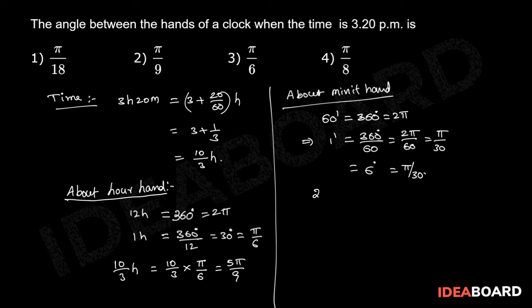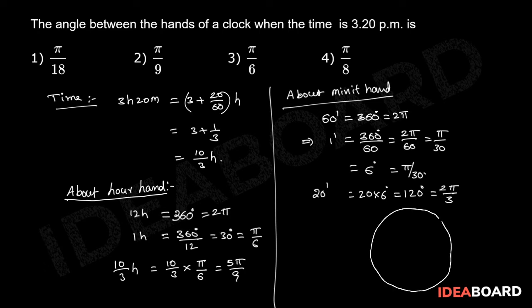20 minutes equals 20 into 6 degrees, that equals 120 degrees. In terms of radians that equals 2 pi by 3. Consider a circle with center O.